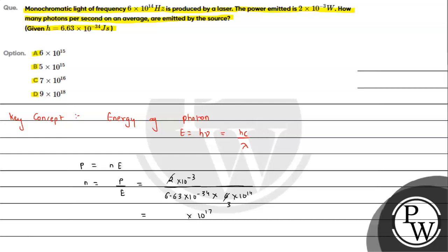This becomes 10^17, and when we divide this, 1 by 19.98 or 19.89, it is 0.05. So if we solve this we can write it as 5×10^15. So this is the number of photons per second we are getting.